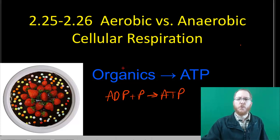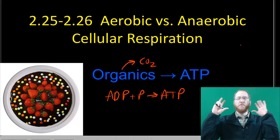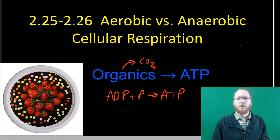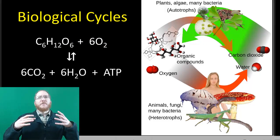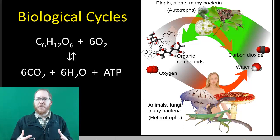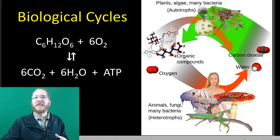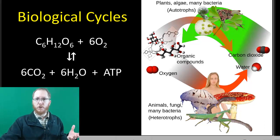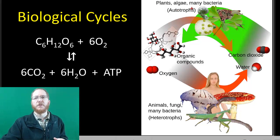That's the big picture. We just finished discussing photosynthesis, which takes carbon dioxide and water and converts that into organic compounds — glucose is our poster child — and oxygen. This was done by photosynthetic autotrophs, so only a small subgroup of organisms do this.